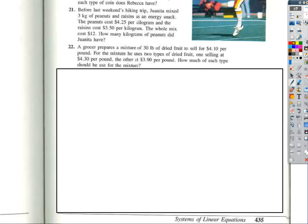Taking the text and converting it into math. So we start with a grocer prepares a mixture of 30 pounds of dried fruit to sell for $4.10 per pound.